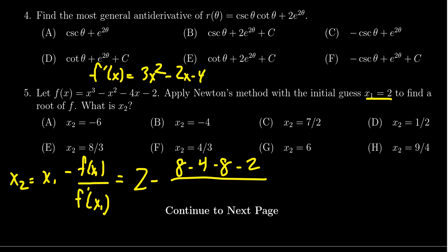Then we have to evaluate the derivative as well. So we plug in 2. 2² is 4 times 3 is 12, minus 2 times 2 which is 4, minus 4.